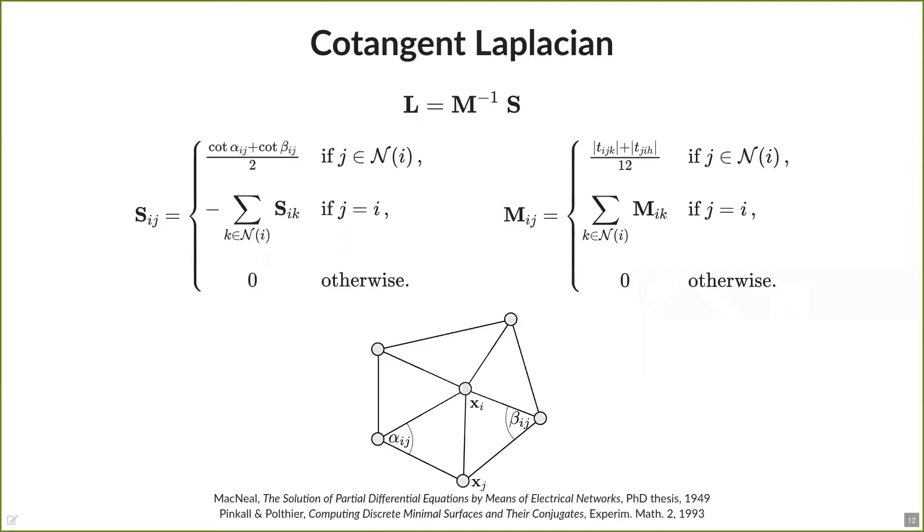As a short reminder, the cotangent Laplacian on a triangle mesh is constructed as the product of a so-called stiffness matrix S and the inverse of a mass matrix M. The division by the mass matrix gives us the pointwise formulation instead of the integrated one. The stiffness matrix is more or less responsible for the name of this discretization, as it contains cotangent weights for each vertex of the mesh and its respective one-ring neighborhood. Concerning the mass matrix, there are numerous different definitions. In our case, we choose the non-lumped FEM mass matrix.